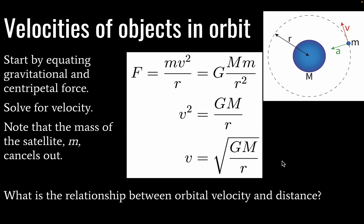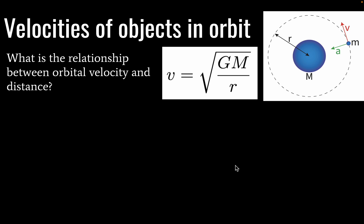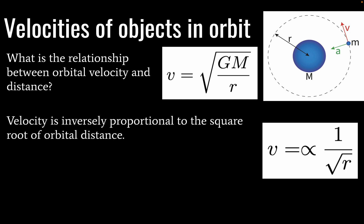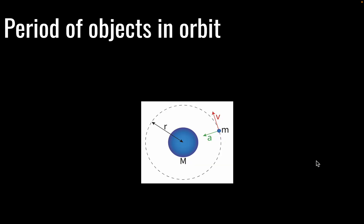So next question: What is the relationship between orbital velocity and distance? We should recognize from this equation that velocity will be inversely proportional to the square root of radius. So as our distance increases, our velocity is going to decrease, and it's going to decrease according to this proportionality.